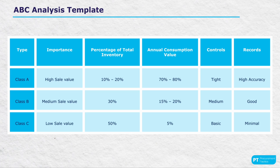Annual consumption rate is a crucial column, as it indicates the percentage of your annual expenditure each class accounts for, highlighting where most of your budget is going. Controls describes the management intensity needed for each class: class A requires strict control due to high value, class B has moderate oversight, and class C has the most relaxed controls. Records: accuracy in record keeping varies by class — high for class A, moderate for class B, and minimal for class C — reflecting the financial impact of each class.